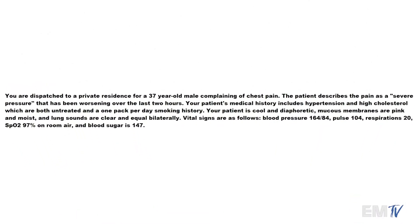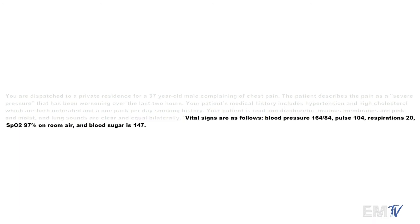My patient is 37 years old, complaining of chest pain which he describes as a severe pressure. The patient appears cool and diaphoretic, but mucous membranes are pink and moist and lung sounds are clear and equal bilaterally. Vital signs: blood pressure 164/84, heart rate 104, respirations 20, SpO2 97% on room air, blood sugar 147. Of note, the patient also has a history of hypertension and high cholesterol, both untreated — significant risk factors — and he is also a smoker.